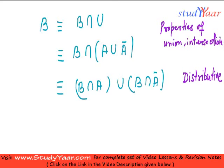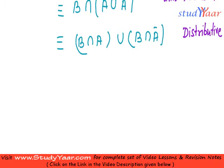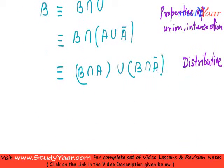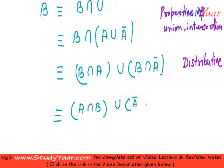Now I am going to use the commutative property. My commutative property says that b intersection a is equal to a intersection b. Therefore I am going to write it as: a intersection b, union complement of a intersection b. There is no problem here because I have used the commutative property.